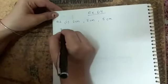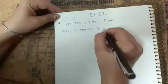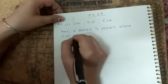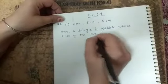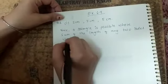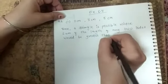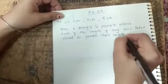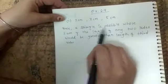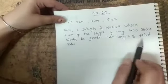We know that a triangle is possible whose sum of the length of any two sides would be greater than length of third side. This is a property of triangle. A triangle is possible whose sum of the length of any two sides would be greater than length of third side.